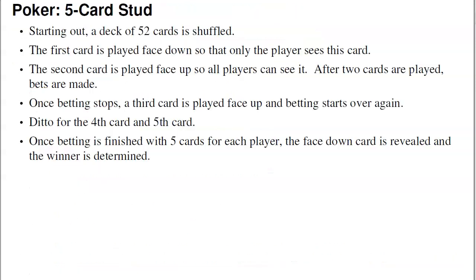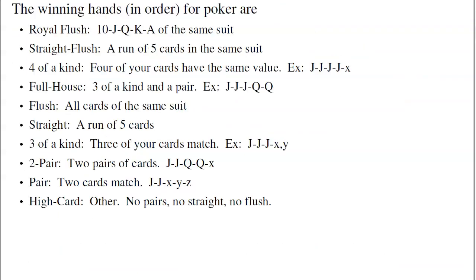With those definitions, I'd like to know what's the probability of drawing different hands in Five Card Stud. The winning hands in poker by order go: royal flush — 10 through ace of the same suit — straight flush, four of a kind, and so on.